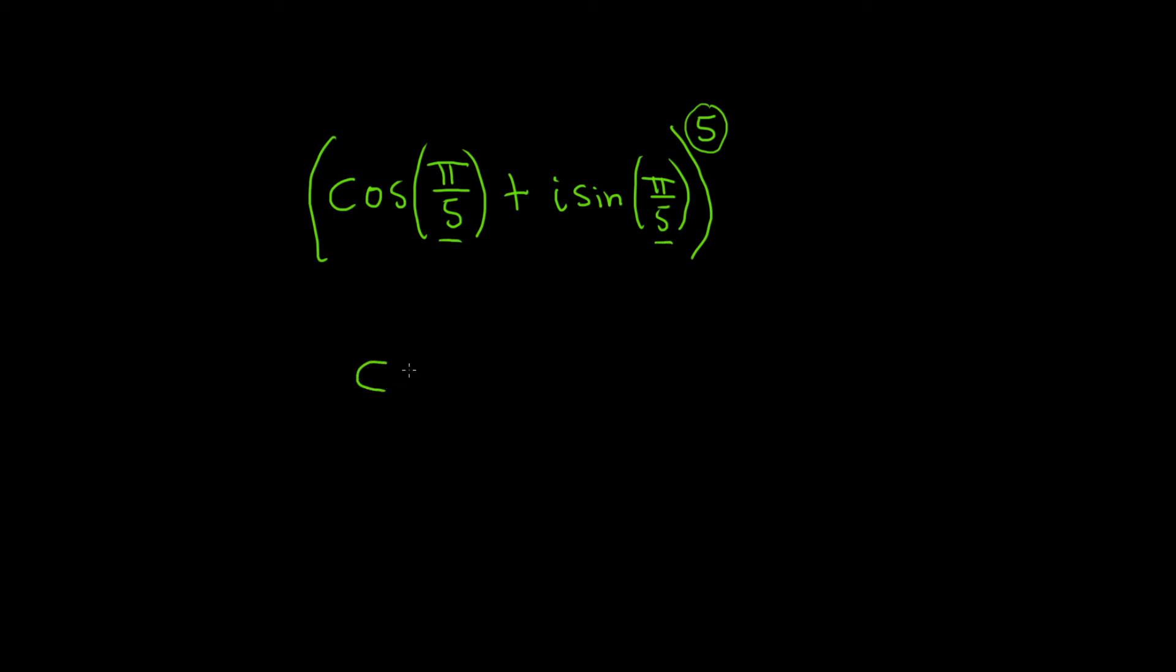So this is actually cosine of 5 times pi over 5 plus i sine of 5 times pi over 5, and the 5's cancel. So we have the cosine of pi plus i times the sine of pi.